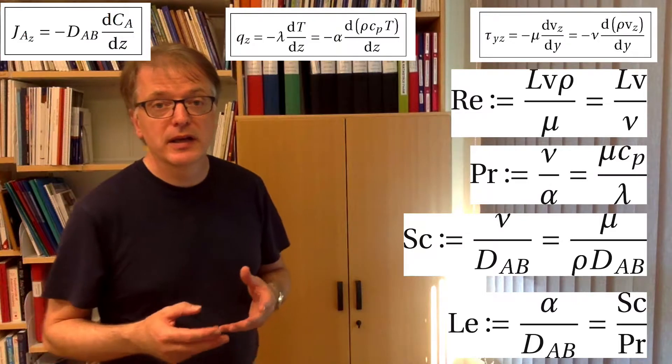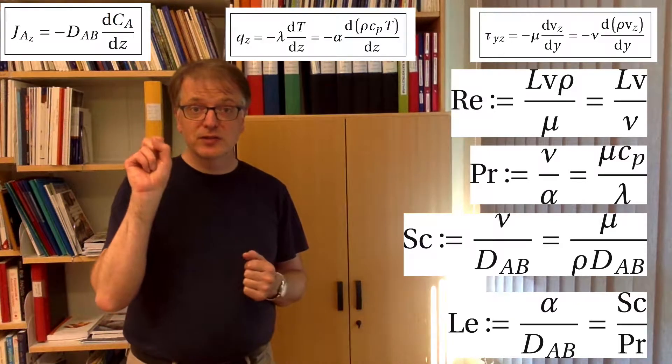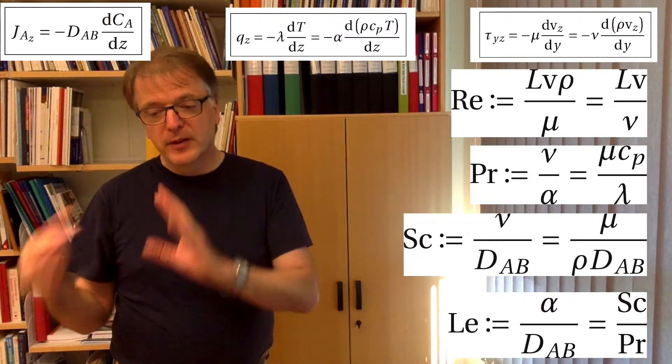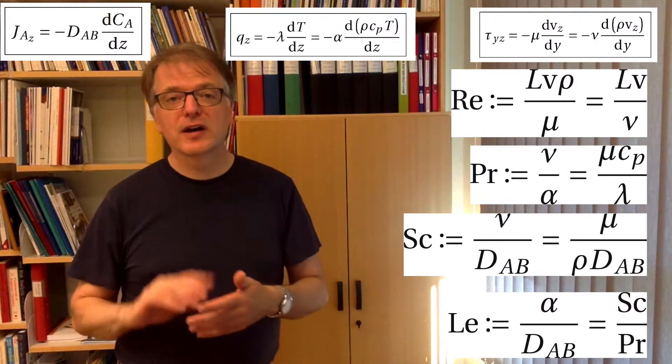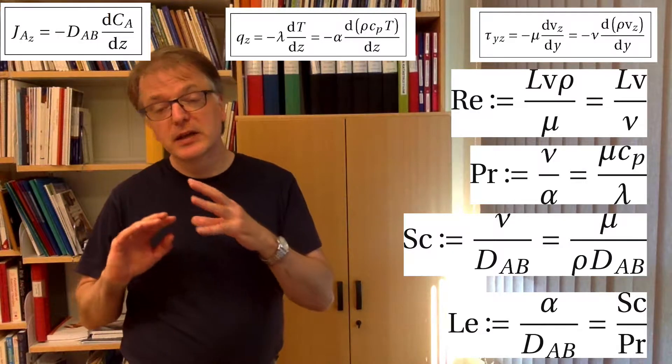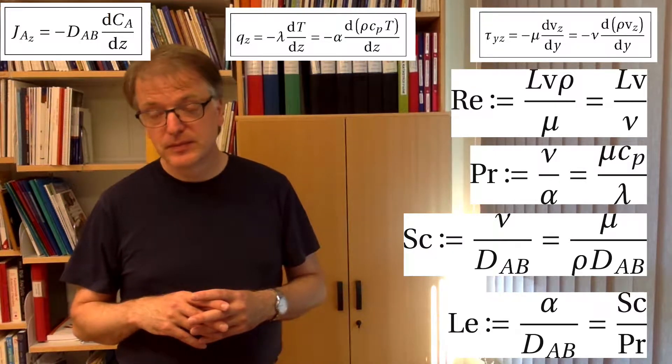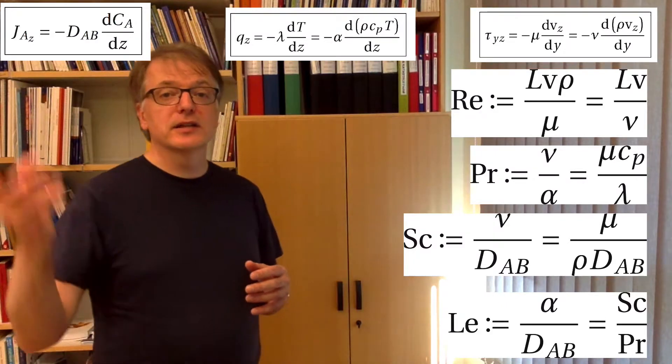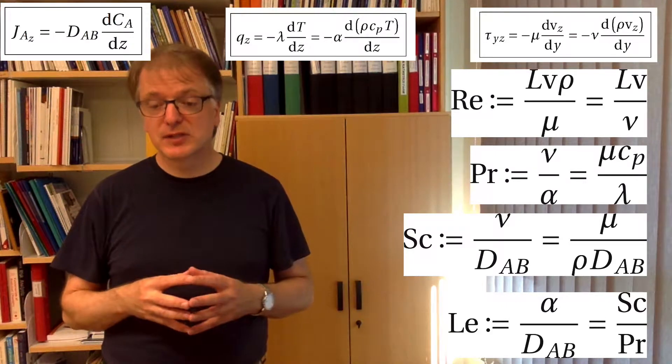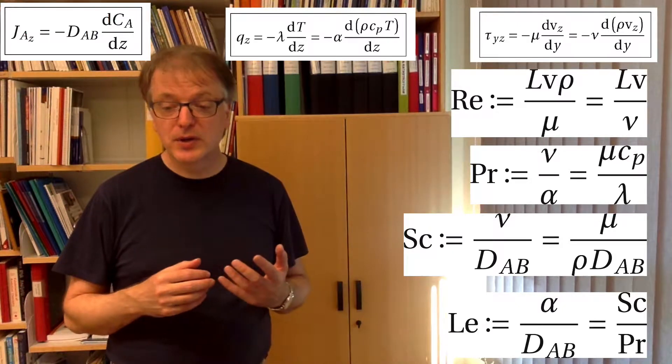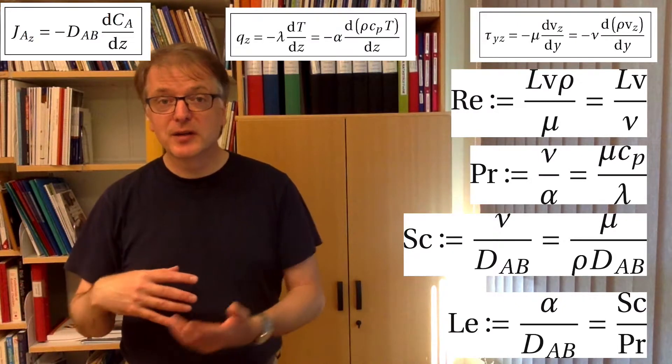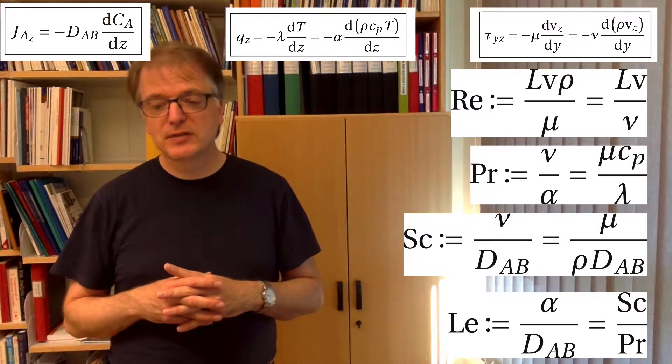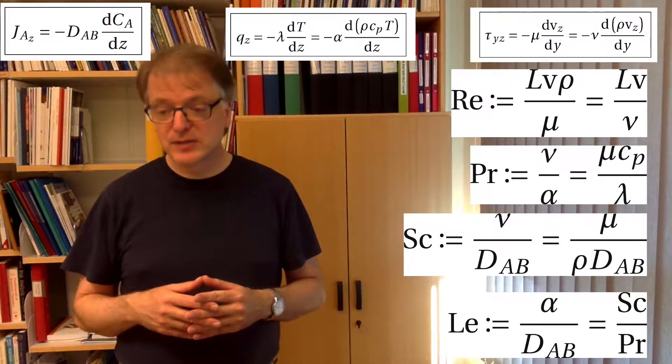Prandtl's number is, per definition (written colon equals), the viscosity divided by the heat diffusivity. Schmidt's number is the viscosity divided by the mass diffusivity. And Lewis number is the Schmidt number divided by the Prandtl number, or the thermal diffusivity divided by the mass diffusivity.